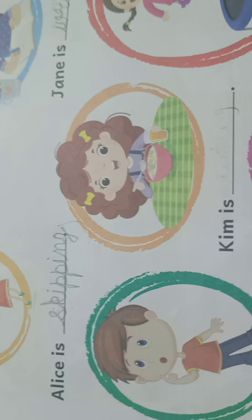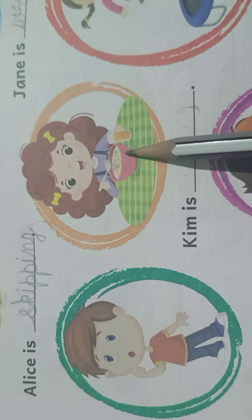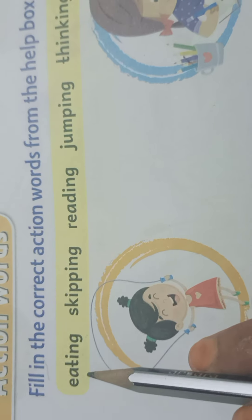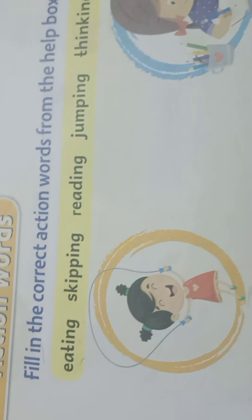Next is this person. Kim is — what is she doing? Yes, she is eating. You can see the picture, and here you can see the spelling: eating. E-A-T-I-N-G, eating. Kim is eating.